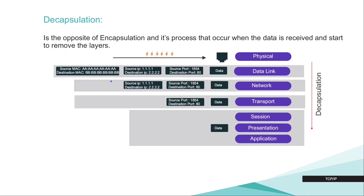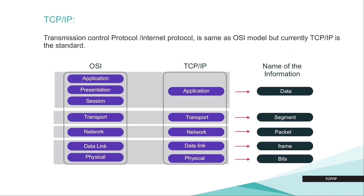The data link layer removes its layer and sends the data to the network layer. The network layer looks at the source IP and destination IP address, confirms the data is meant for it, removes its layer, and sends it to the transport layer. The transport layer looks at the destination port number — Google's server identifies this as an HTTP request. The data is then ready to go through session, presentation, and application. The application layer reads the HTTP request. OSI model is the older version of the models.